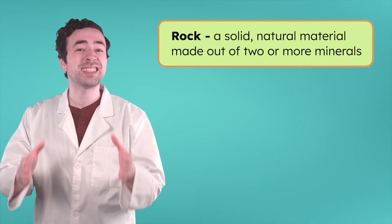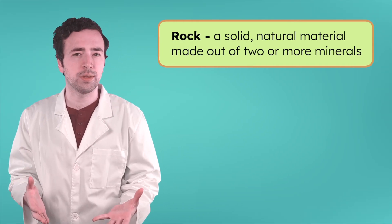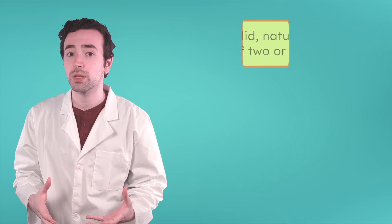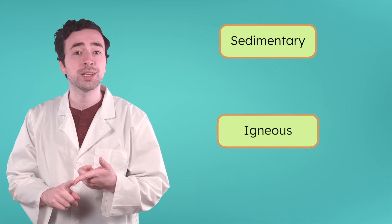We know that a rock is a solid, natural material made of a combination of minerals. All rocks can be grouped based on how they're formed. Do you remember the three types? Rocks can be sedimentary, igneous, or metamorphic. But within those groups, there are actually more than 5,000 specific types of rocks on Earth, like slate, sandstone, or shale. That's a lot to keep track of. But identifying all these different types of rocks can tell us a lot about Earth's history.